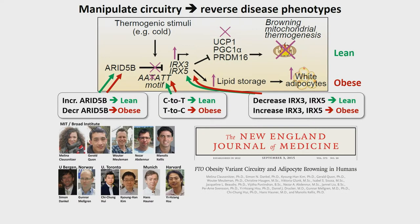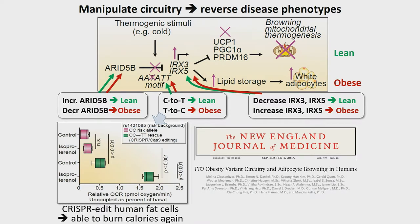We were able to manipulate the circuitry both at the upstream regulator and downstream target genes, and also change the single nucleotide variant. Out of three billion nucleotides in the human genome, we chose one nucleotide that we edited using CRISPR-Cas9 in primary adipocyte cells from risk individuals. With a single nucleotide change, we completely changed the cellular signature of obesity — cells that previously couldn't burn calories were now burning calories like normal cells.